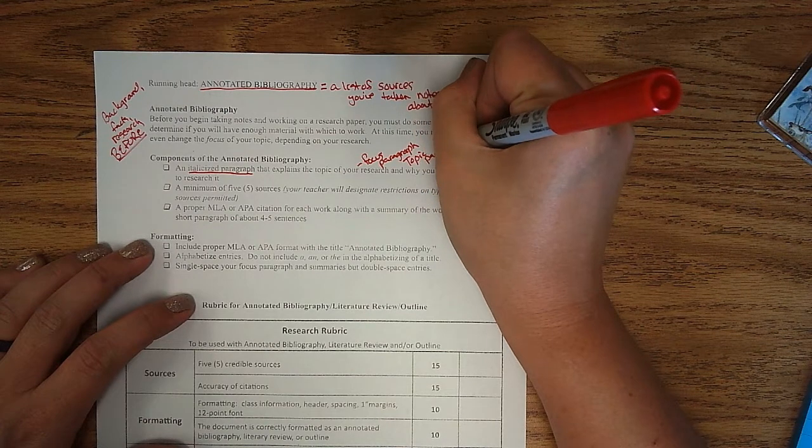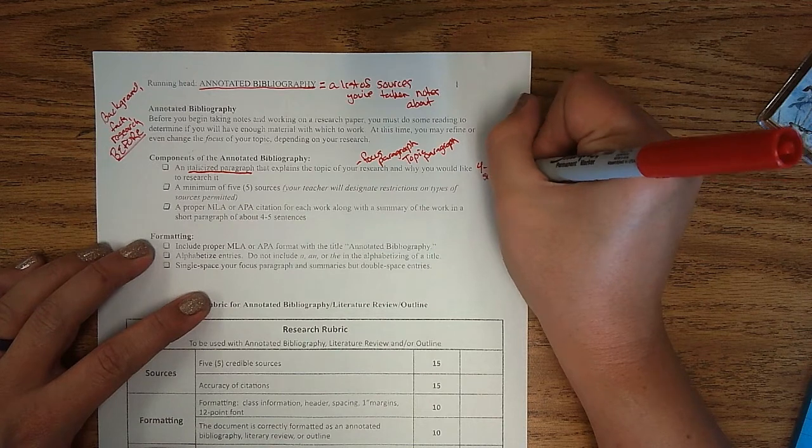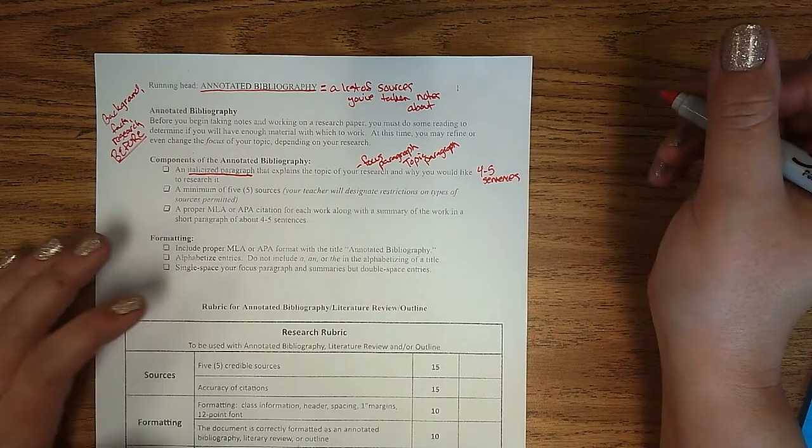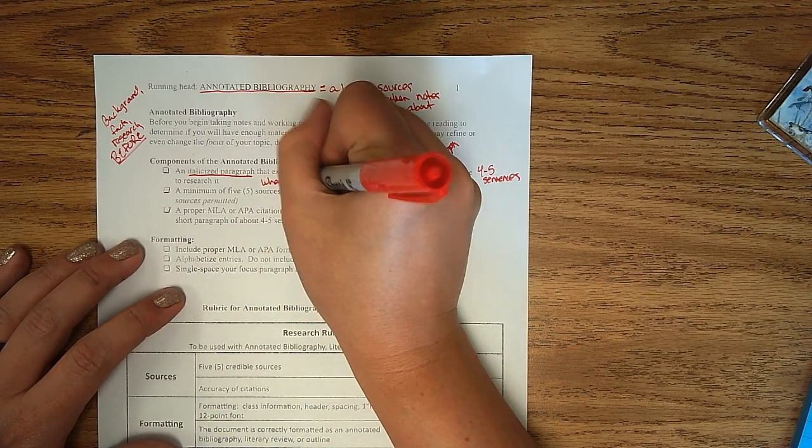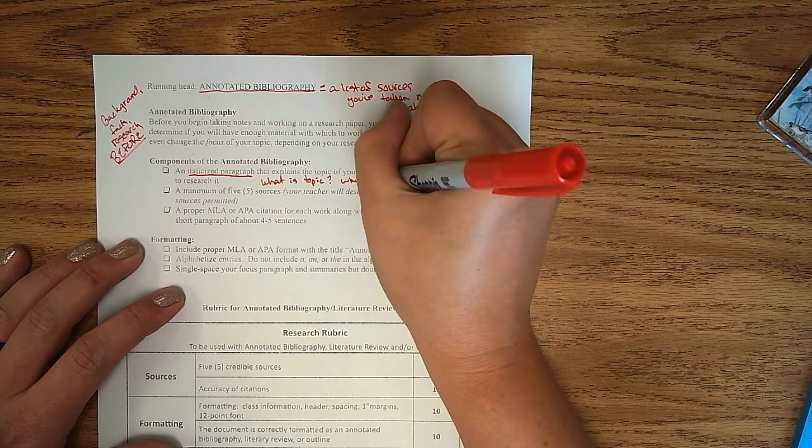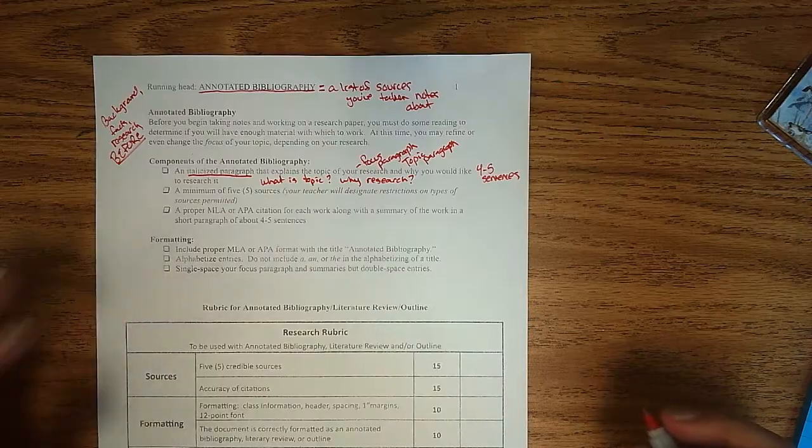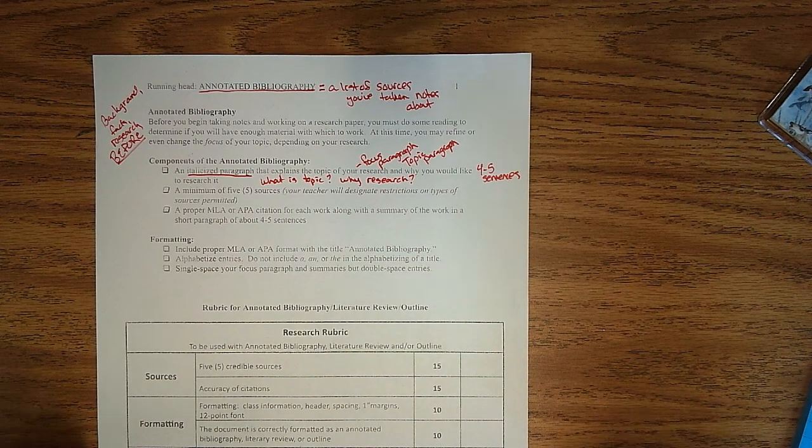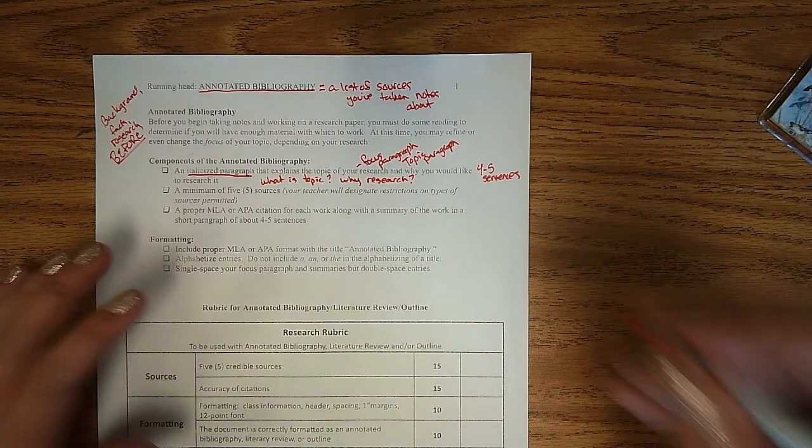But you're looking at about four to five sentences that tell the reader, basically, what is your topic and why are you researching it? So that gives your reader an idea of what the sources, the ability to evaluate whether the sources you've listed here are going to be appropriate to that topic and the argument that you have. You might want to include a research question here.